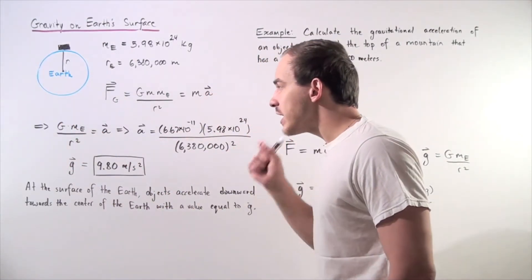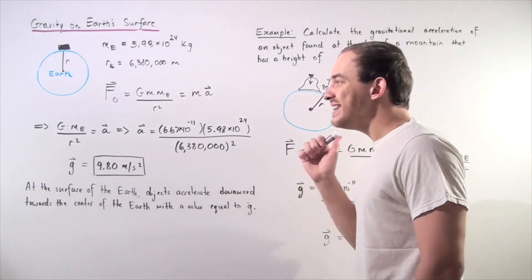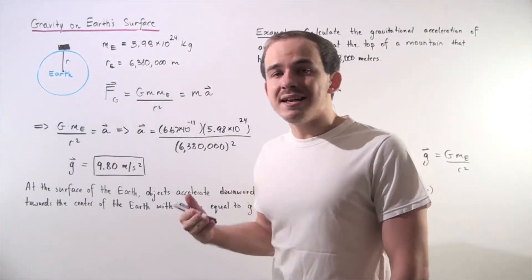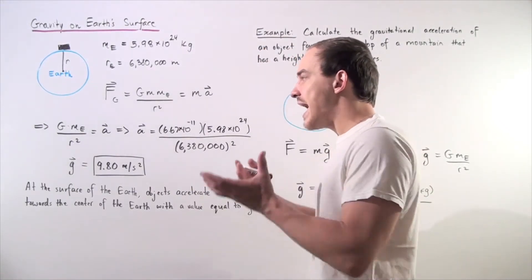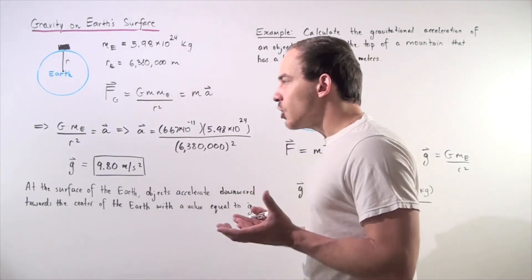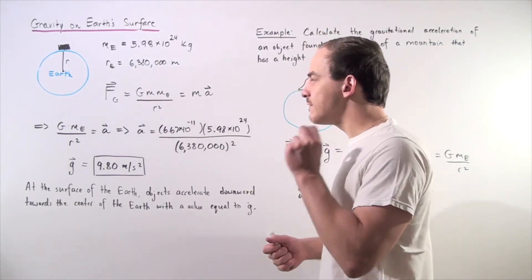Now, notice the acceleration of the object is independent of the mass of the object, and that's exactly why a very light object and a very heavy object will accelerate with the same exact value.